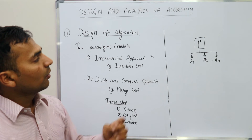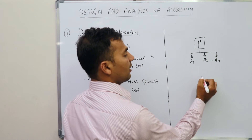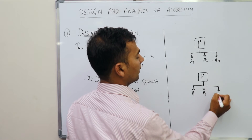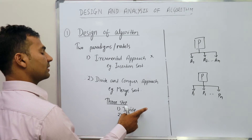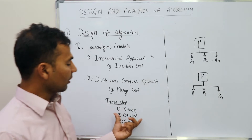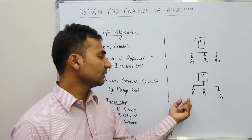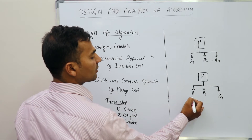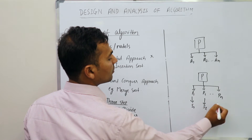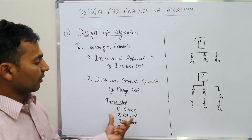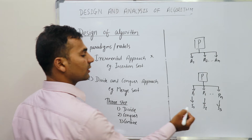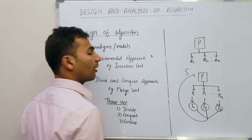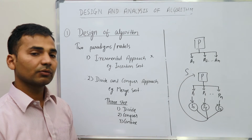In the divide step, we divide the problem P into sub-problems P1, P2, and Pn. In the conquer step, we recursively solve these sub-problems, because they are of similar types, to find solutions S1, S2, and S3. Finally, in the combine step, we combine these solutions to find the solution of the original problem.